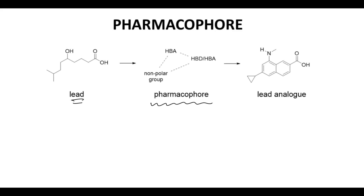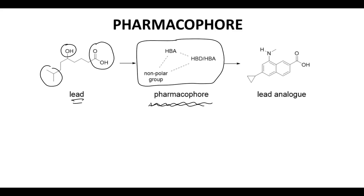On the left, we have a lead, and this lead has some properties — the carboxylic acid and the alcohol stand out, and then you have this nonpolar group. As it turns out, you might analyze the structure and find out that all three of those features are vital for potency. You might then describe the pharmacophore and say we need a nonpolar group over here, separated by some distance from a hydrogen bond donor and hydrogen bond acceptor, which the carboxylic acid gives us, and then over some distance away we need a hydrogen bond acceptor — and that's our alcohol.